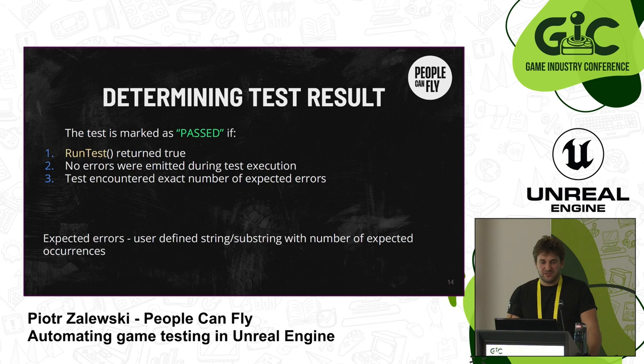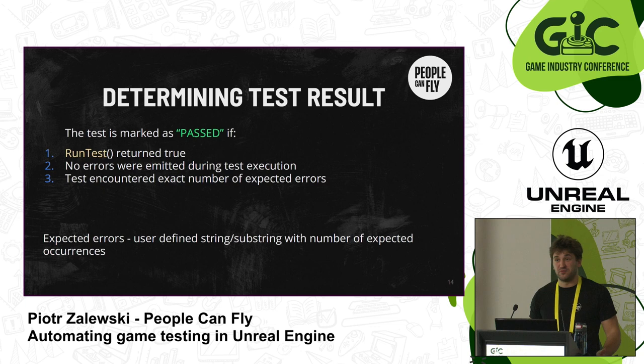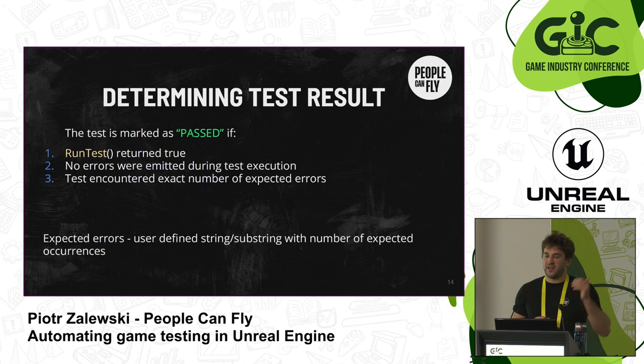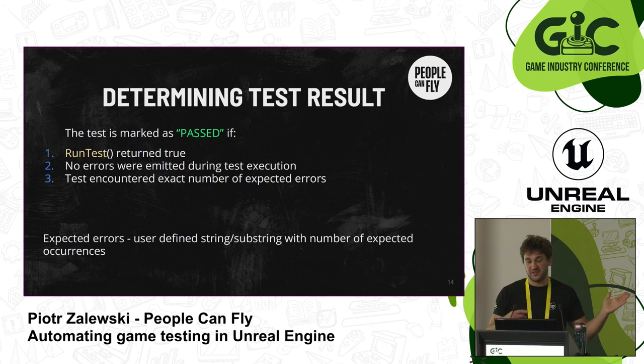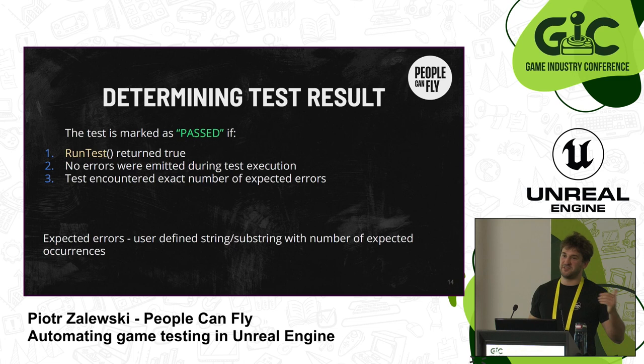To determine test results, a couple of assumptions must be met. First, runTest has to return true. Second, no errors should be emitted during test execution — from the beginning of the test until its end, we should not have any logged errors. However, if you are expecting an error, you can define something called an expected error. But it's a double-edged sword: if you say you're expecting one error and it doesn't occur, the test will be marked as failed. I tend not to use them — I would rather suggest asking someone to fix the error rather than cover it up.